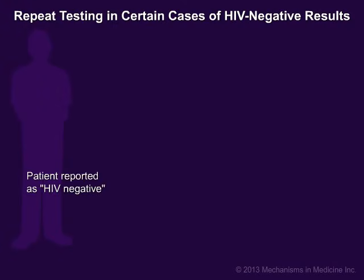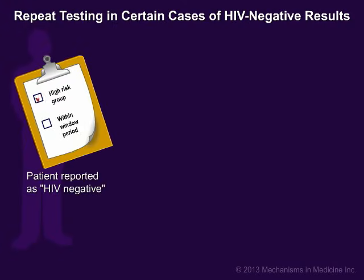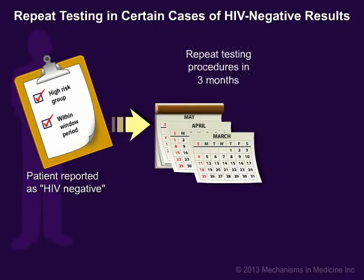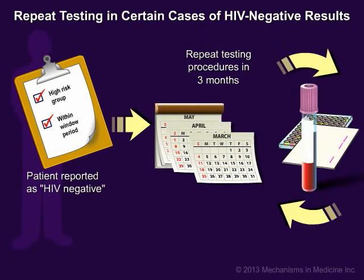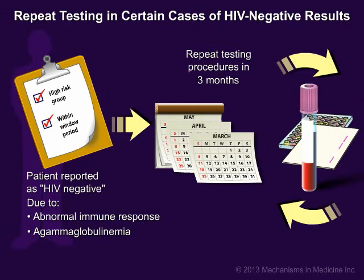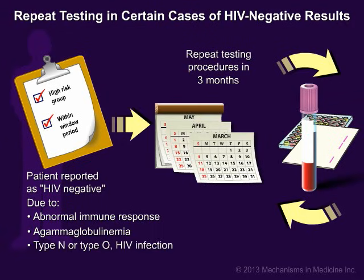If your results return negative but you are considered to be at a high risk of infection, or if you are within the window period, you should return to your local clinic or hospital in another three months and repeat testing. Other reasons for false negative results may include an abnormal immune response, a condition known as agammaglobulinemia, infection with the type N or type O strain of HIV, and technical or clerical errors.